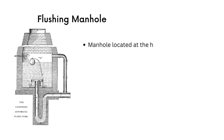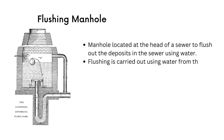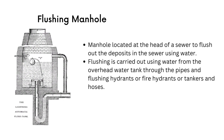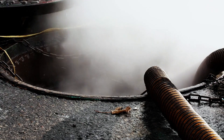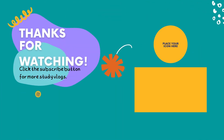Finally, we have flushing manholes. Flushing manholes are located at the head of a sewer to flush out deposits using water. Flushing is carried out using water from an overhead water tank through pipes and flushing hydrants, fire hydrants, tankers, and hoses. They are mainly provided at the head of the sewers. And that's about the different classifications of manholes. Thank you for tuning in and we look forward to seeing you in our next video.